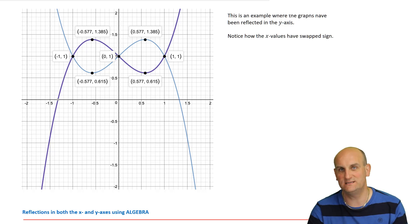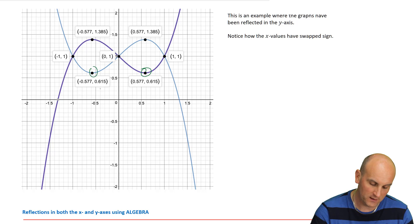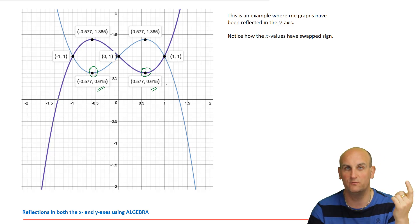If we then move on and have a look at an example where the graphs have been reflected in the y-axis, well, in this situation, the y-axis is our line of reflection or mirror line. And so we are looking for our x values to change. And in this situation, as we've done before, if I look, my y values are the same at 0.615. But my x values in this situation have changed sign. What was a negative becomes a positive. What was positive becomes a negative. And effectively, that's the whole theory done.